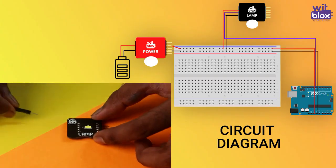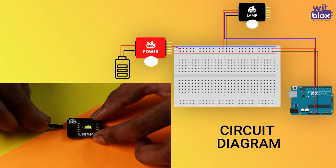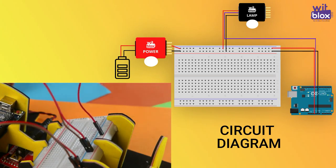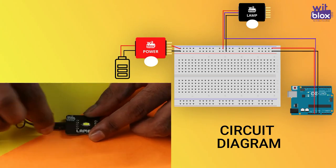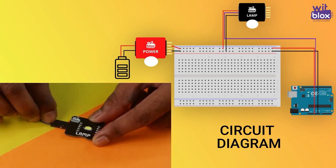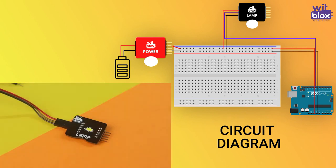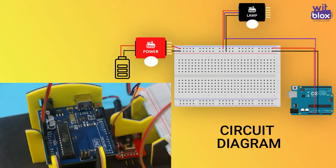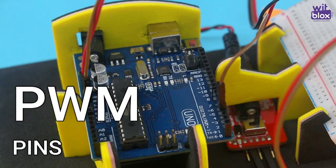I hope you know the connection of WitBlox's power with breadboard and Arduino. Connect VCC of lamp to VCC of breadboard, ground of lamp to ground of breadboard, and data of lamp to any of the pins with the tilde symbol. These tilde symbol pins are called PWM pins.